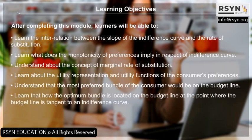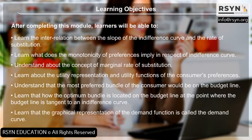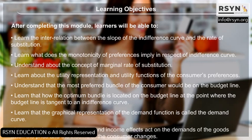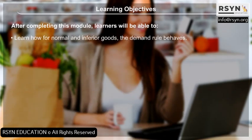Learners will learn how the optimum bundle is located on the budget line at the point where the budget line is tangent to an indifference curve. They will understand that the graphical representation of the demand function is called the demand curve, and learn how substitution and income effects act on demands when price and income change, and how the market demand is calculated.